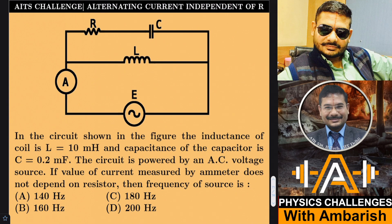This is a problem which involves alternating current which is independent of the value of the resistance. In the circuit shown in the figure, the inductance of the coil is L equal to 10 millihenry, and the capacitance of the capacitor is 0.2 millifarad.